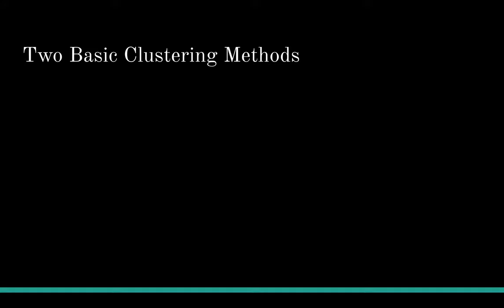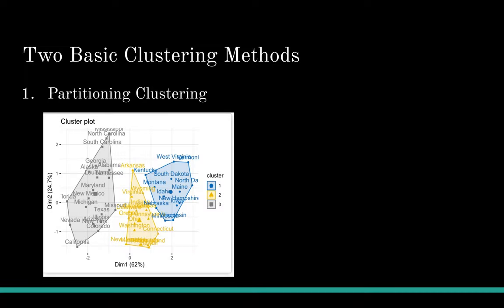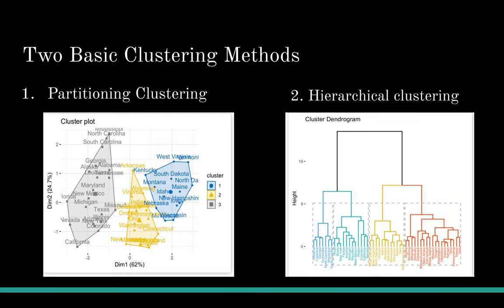The two most basic common methods for clustering are partitional clustering, where K-means clustering is the most commonly used, and hierarchical clustering. Partitional algorithms are clustering techniques that subdivide the dataset into a set of K groups, where K is a number of groups pre-specified by the analyst. From the picture, we can see that we divide the dataset into three clusters based on their similarities. Hierarchical clustering does not require pre-specifying the number of clusters. The most common visualization is a dendrogram, and we can use Euclidean distance to measure similarity and dissimilarity. When the cutoff number is different, we can have different subgroups.